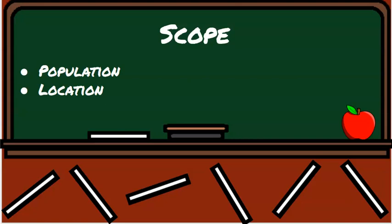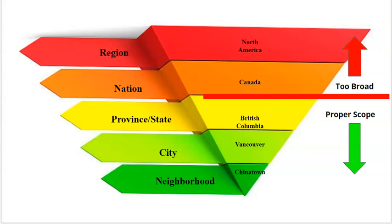We can also narrow scope based on location. A very common problem at the AP reading is students talking about very large regions, particularly North America, which covers an enormous amount of land and cultural differences. Bringing it down to a specific nation like Canada is better, but Canada is still very large and diverse. One of the best examples I ever saw at the AP reading was a student who talked not only about the province of British Columbia and the city of Vancouver, but narrowed it down to Chinatown — discussing the negative impact of gentrification in that particular neighborhood. Those narrow, specific location choices made the scope clear and earned a high score.